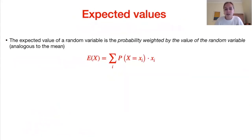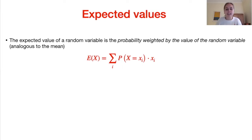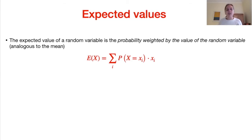Moving on to expected values. The expected value of a random variable is the probability-weighted value of the random variable. It's very similar to what we know about the mean. When we looked at statistics, we could calculate the mean height of students by adding all values and dividing by the number of students. With probability distributions we don't have the data — we're trying to deduce what we could expect based on the probabilities. The formula, shown here in red, is the sum over all probabilities times the value of the random variable.